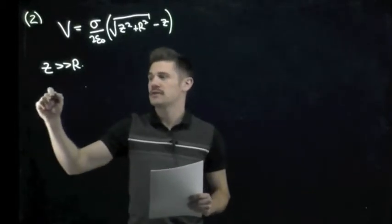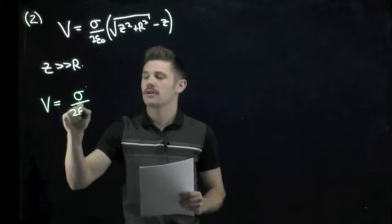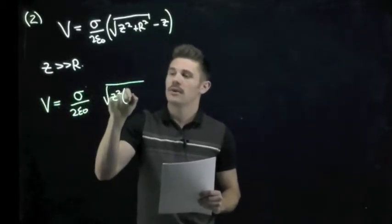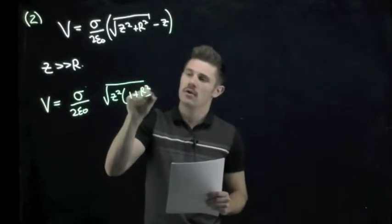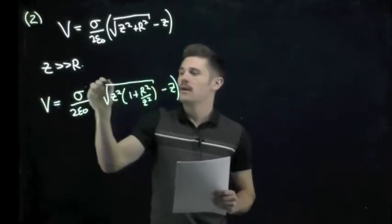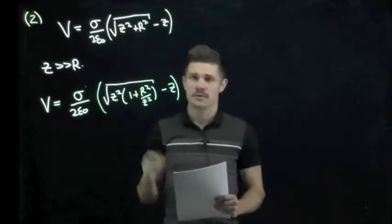So we want to do that first with the square root here where we try to essentially factor out a z. So we have the square root of z squared times one plus r squared over z squared inside of that square root minus z. And this is just me factoring out a z squared from each of the terms within the square root.